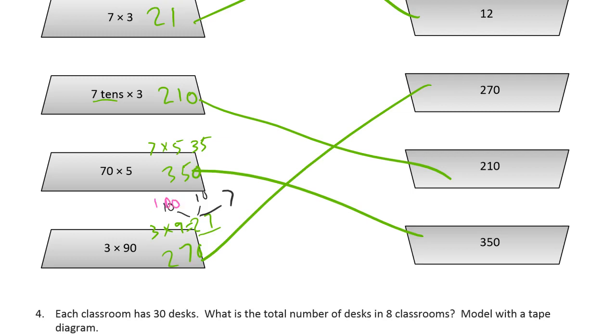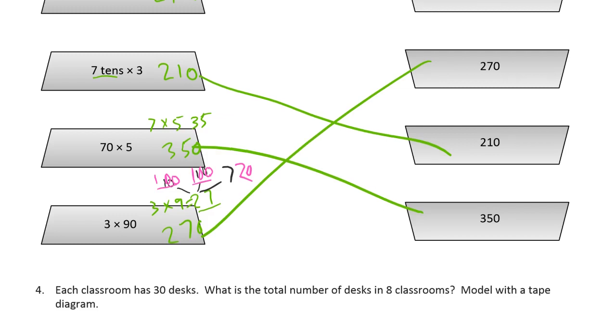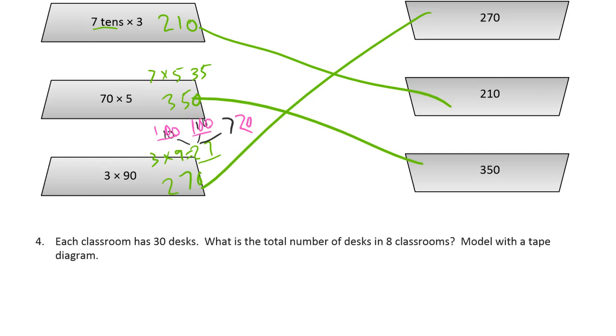And this ten tens would be a hundred, and this seven tens would be seventy, and now you can see a hundred, two hundred, seventy. So it might help to look at the digits that way and think about it. If you're just having a hard time making that transition from ones to tens, it might help to think of groups of ten like that.